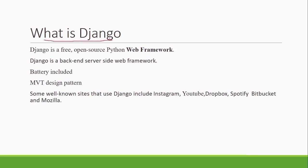Now, what is Django? Django is a free and open source Python web framework. Like I said, every programming language will have one or the other framework. For Python, we have different frameworks — one of them is Django. Django is a backend, server-side web framework, meaning every application has a frontend and a backend. Frontend interacts with the user, and backend interacts with the database. Since Python is normally used in the backend, Django, which is based on Python, will be used in the backend.